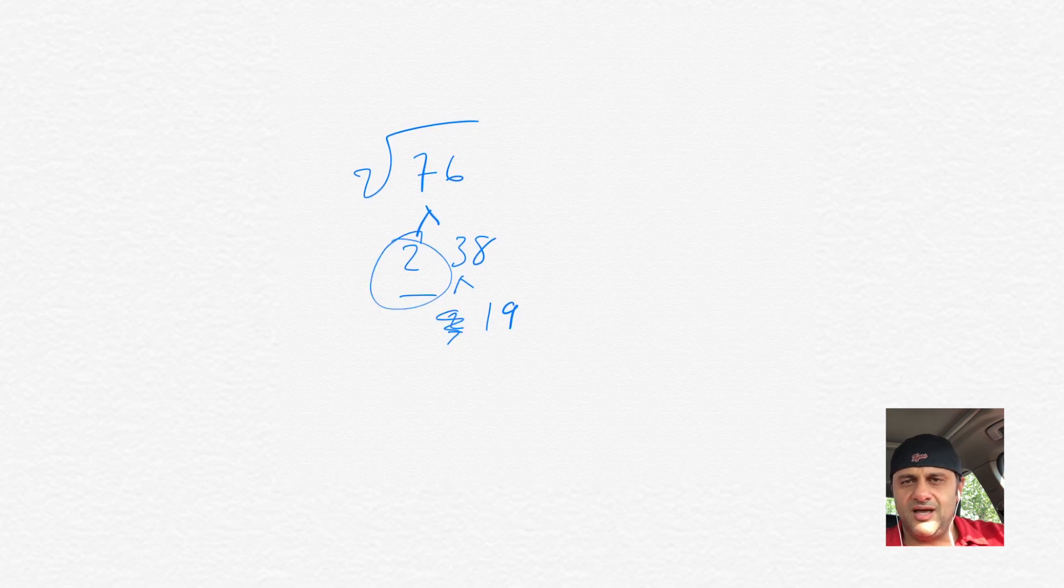19 doesn't break down. So the pair of 2s, you can cross one out, and then the other one comes out of the square root. And so then we have 2 times the square root of 19. That's the simplified version there.